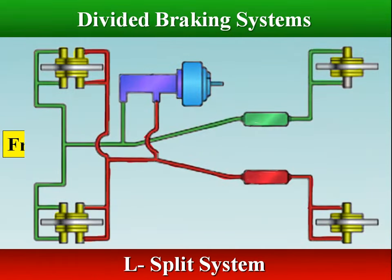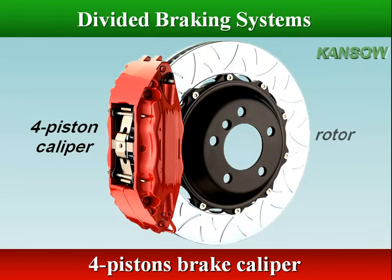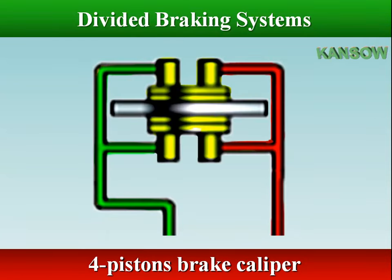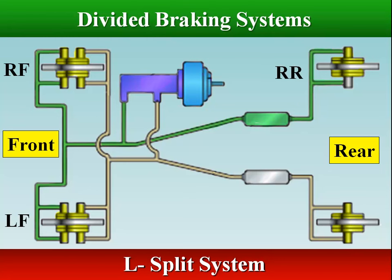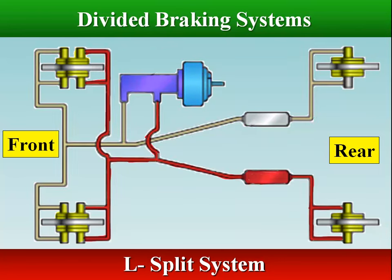An alternative arrangement for front-engine rear-wheel-drive vehicles is an L-split. The front disc brake units have four-piston calipers. One inner and one outer piston on each front caliper connect to the right-hand rear brake unit, and the other two pistons of each front caliper connect to the left-hand rear brake unit. As with the diagonal split system, if there is a failure of either half of the system, it still leaves 50% of the braking capability.